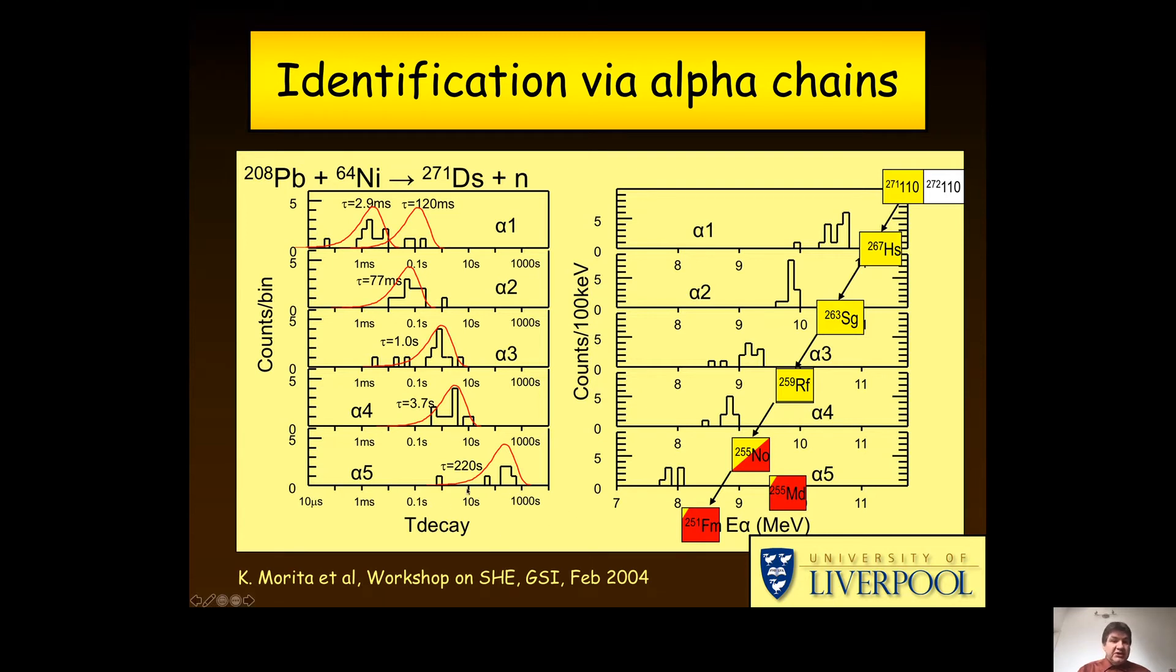I start at the bottom end with Fermium-251, 100 protons, 151 neutrons. And then I go back up with five alpha decays, each one changing proton and neutron number by two. Then I arrive at the top, knowing that there have to have been 110 protons and 161 neutrons to begin with, giving me the isotope 271-Darmstadtium. That is how you prove to the world and the scientific community that you have created element 110 Darmstadtium.